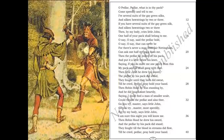Oh peddler, peddler, what is in the pack? Come speedily and tell to me. I have several suits of the gay green silk and the silken boardings by two or three. So little John asked the peddler what he had in his pack, and the peddler replied that he had several suits of bright green silk and two or three silken boardings.